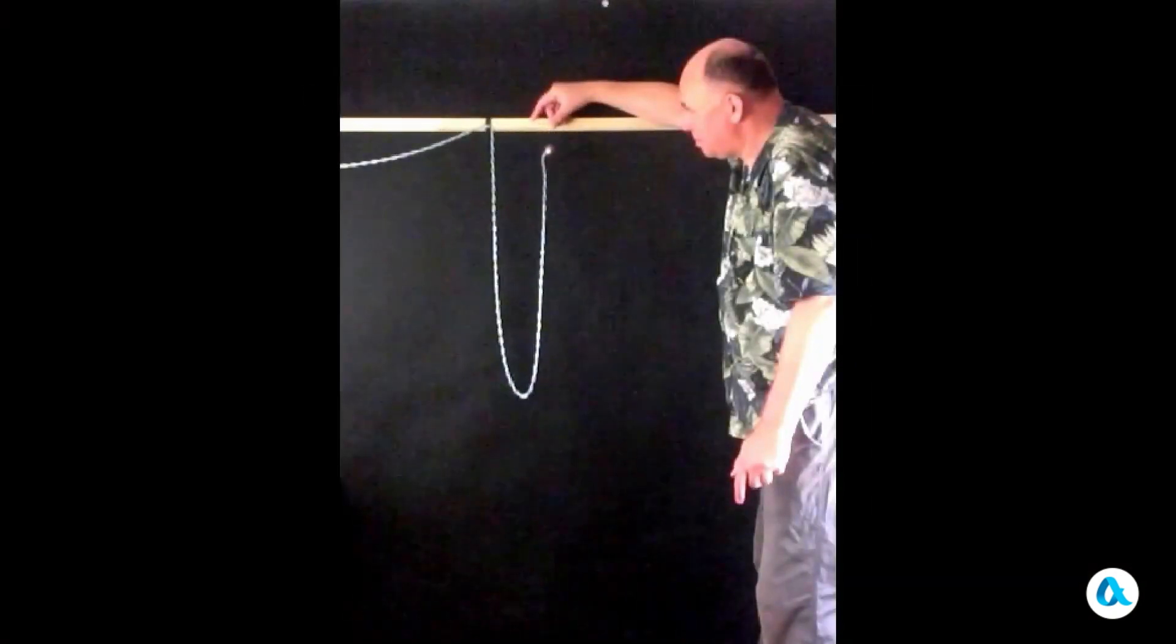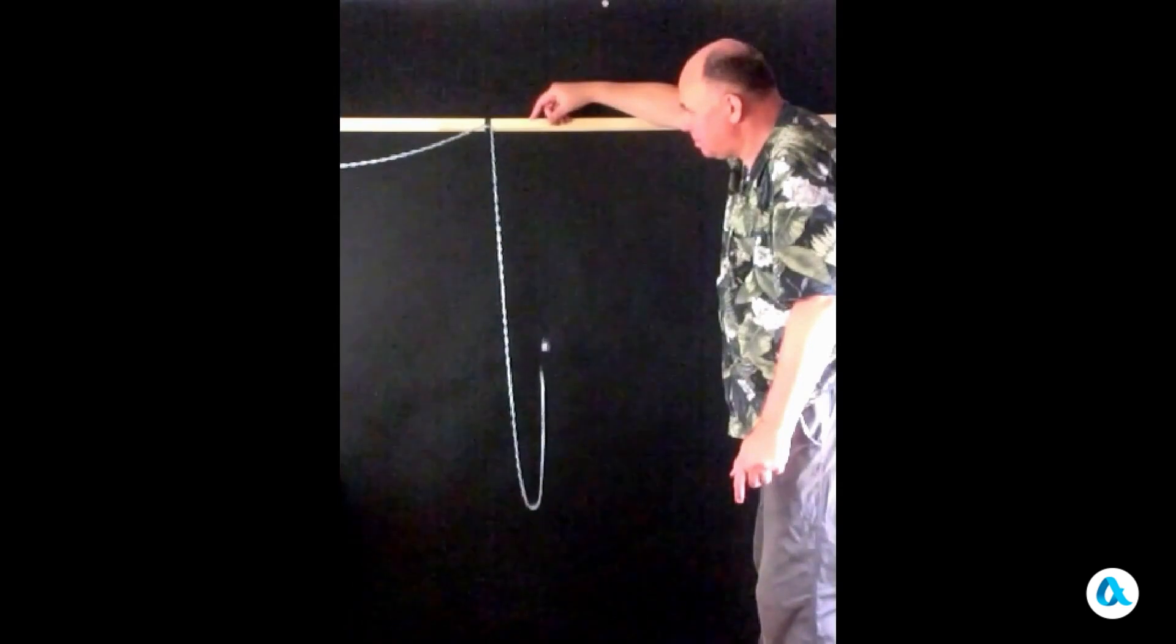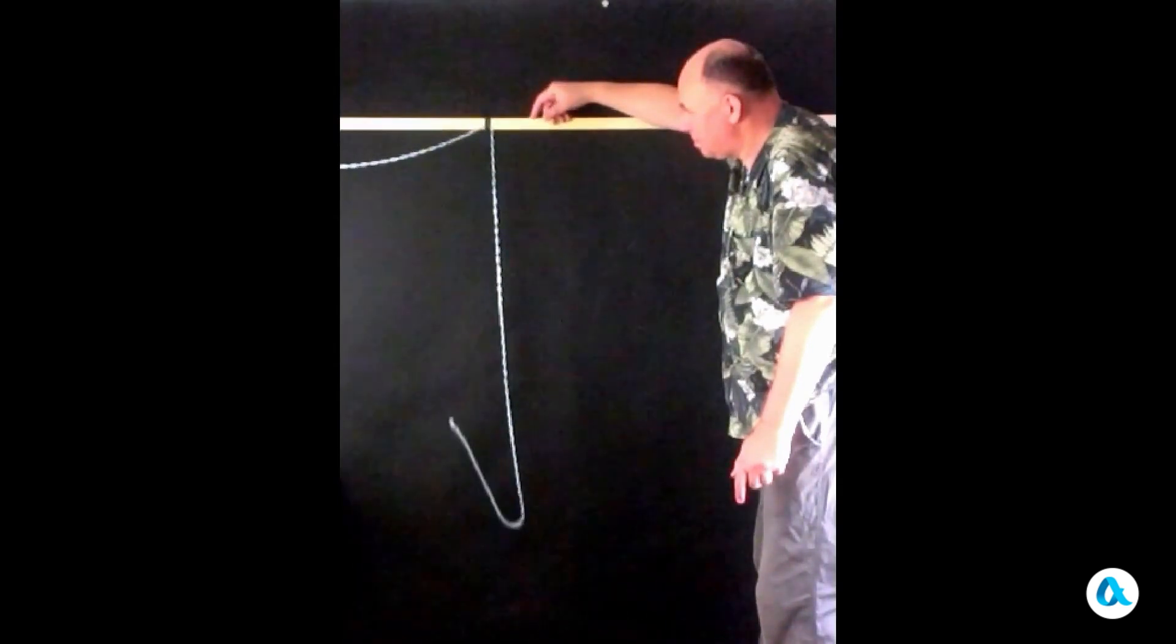I release the chain and the ball. And at first, the end of the chain and the ball fall next to each other. But then the end of the chain moves ahead. And that means it's moving with an acceleration greater than the acceleration due to gravity.